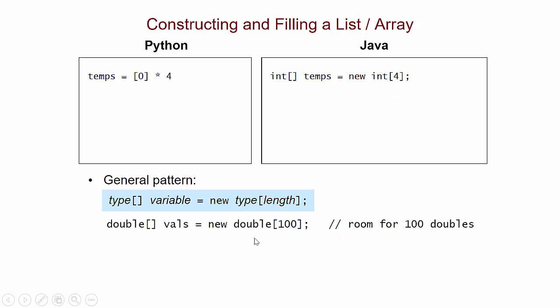So here's some other examples. Here I'm creating an array that has room for 100 doubles. Doubles are, remember, floating point values. Here I'm creating an array that has room for 10 strings.